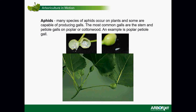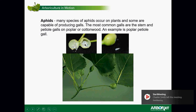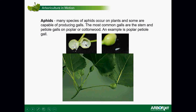Aphids are frequent gall-forming insects. Some of the most common are these petiole or stem galls on poplar. You can see here an example where the insect is growing within the gall compartment, and the plant tissue has grown around it to protect the insect.